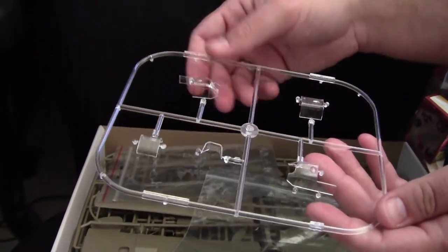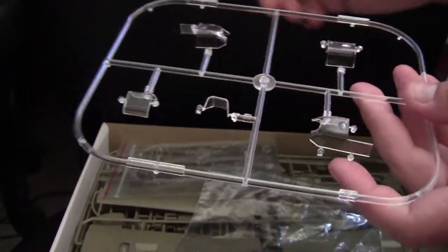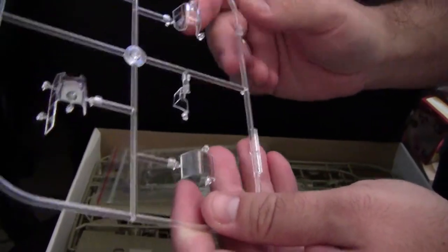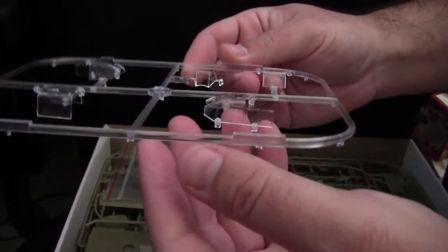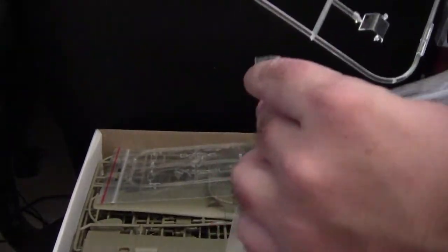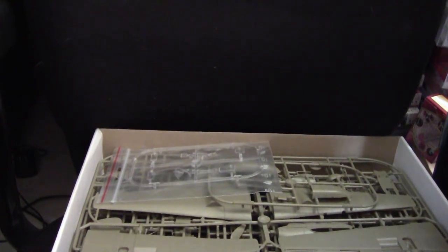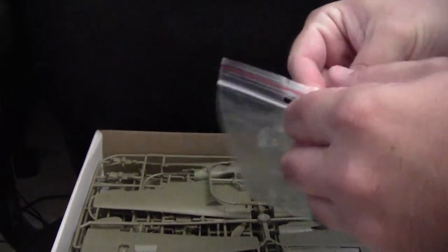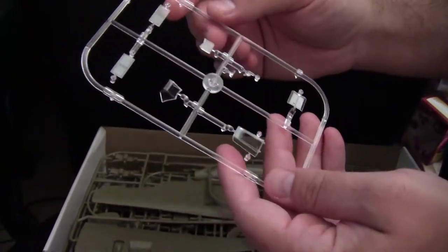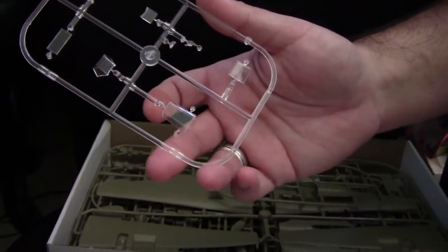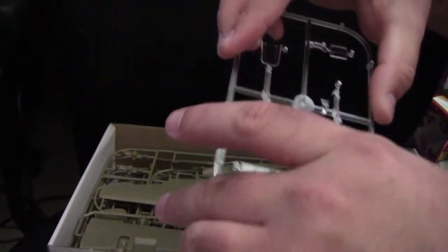This also includes obviously the different holes for the variant antenna types, all of which are nicely molded here. Continuing on once I get this back in its little bag, we have a couple additional clear parts for some of the other components as well as the gun sight. Again, very nicely rendered.